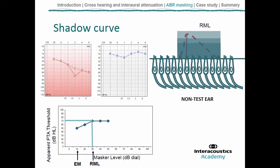So in auditory brainstem response testing, rather than measuring all these different points to find the plateau, what's required is just to jump to this point directly. We need to know the relationship between the masker level and the stimulus level in auditory brainstem response testing.